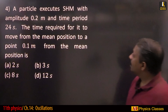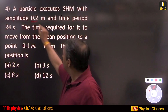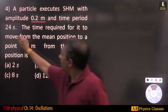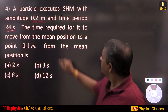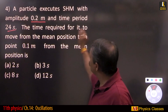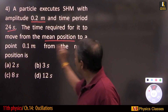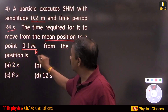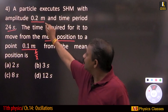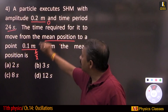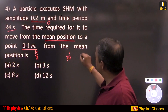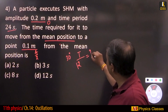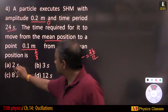A particle executes simple harmonic motion with amplitude 0.2 meter and time period 24 seconds. Find the time required to move from the mean position to 0.1 meter. Since 0.2 meter is the amplitude, 0.1 meter is amplitude divided by 2. Mean position to amplitude/2 corresponds to 30 degrees. 30 degrees is T/12. Time period is 24, so 24 divided by 12 equals 2 seconds.